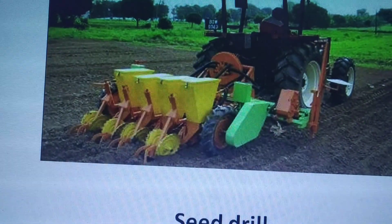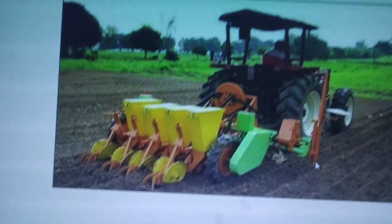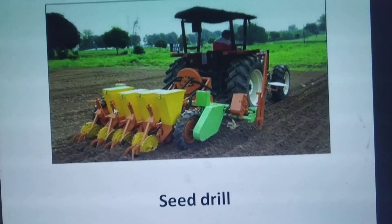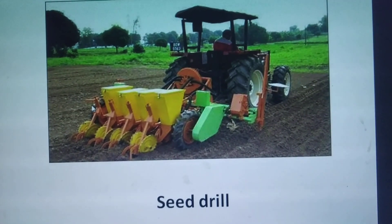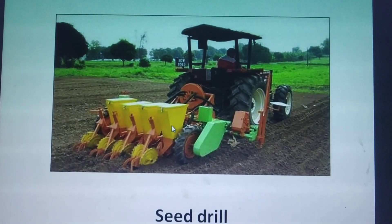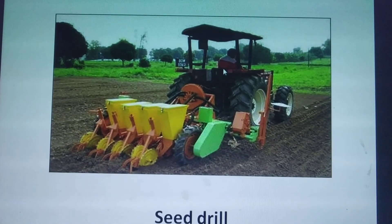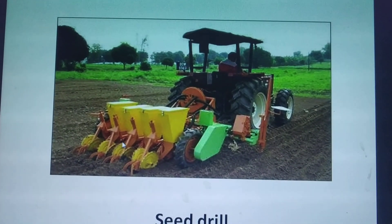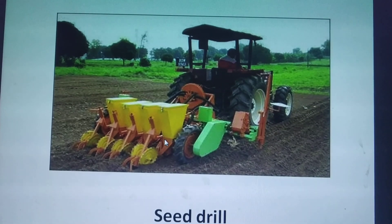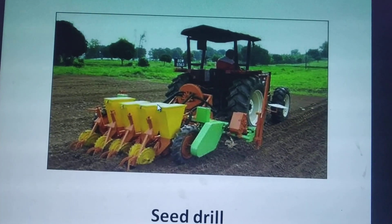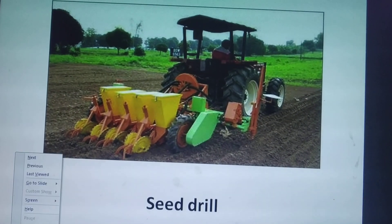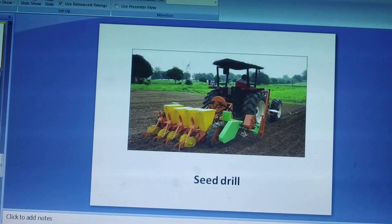The next is the modern method. In modern days, a cultivator is used with containers attached to it. Seeds are placed inside the containers, and with the help of a tractor, the seeds drop from the containers and the sowing process is completed.